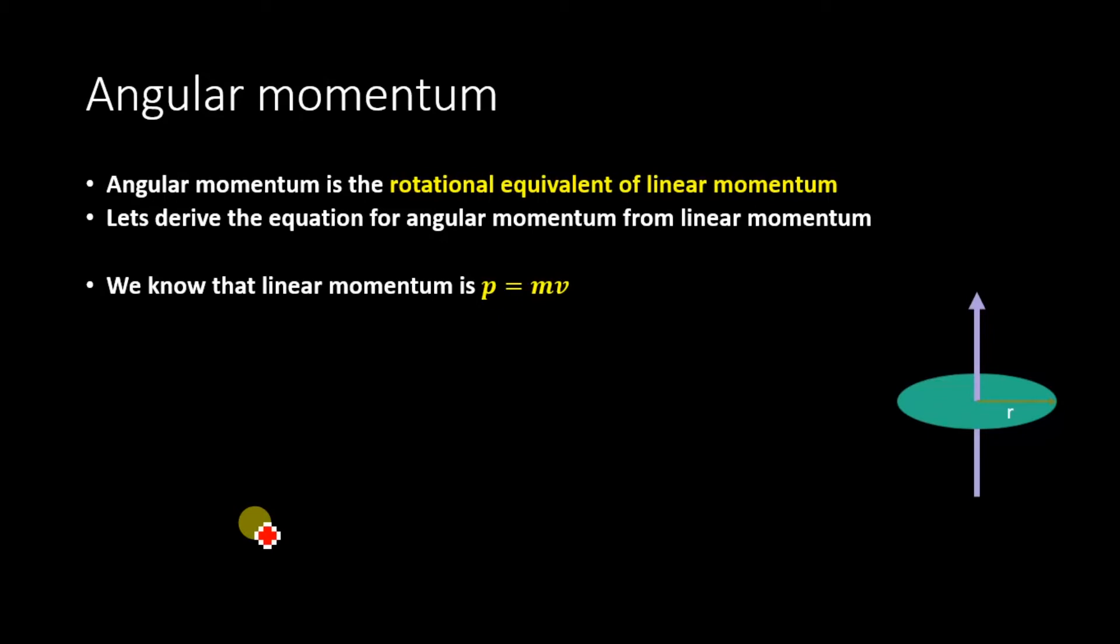We know that linear momentum is p equals mv, and we know that angular velocity is related to linear velocity by the relation v equals r cross omega, where v is the linear velocity, r is the radius, and omega is the angular velocity.